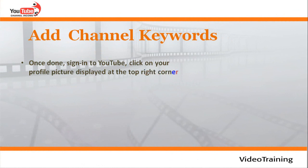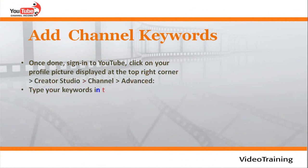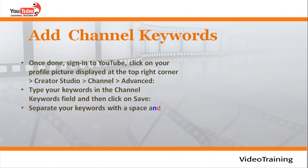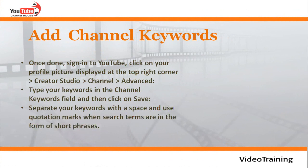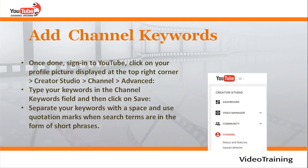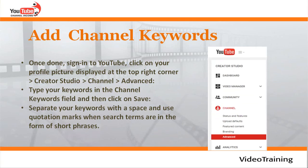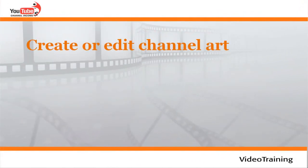To add channel keywords, sign into YouTube, click on your profile picture at the top right corner, then go to Creator Studio, then Channel, then Advanced. Type your keywords in the channel keyword field and click Save. Separate your keywords with a space, and use quotation marks when search terms are in the form of short phrases.